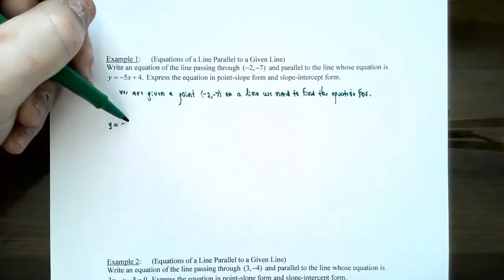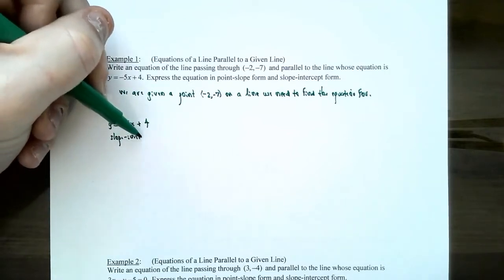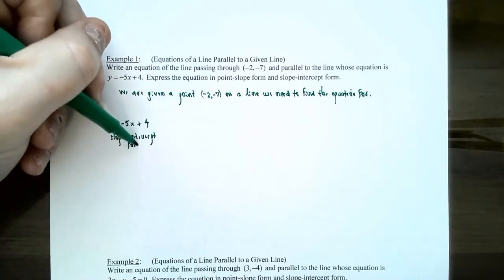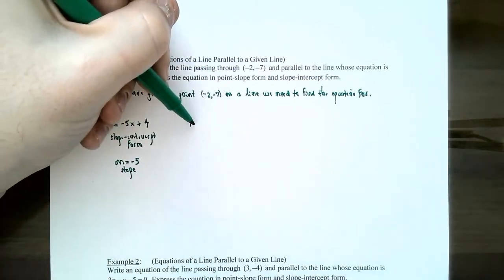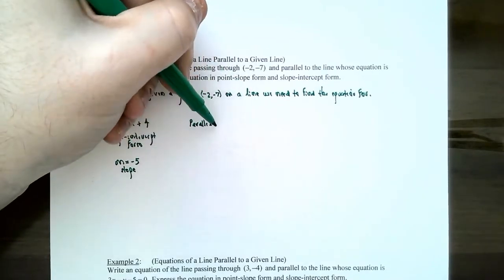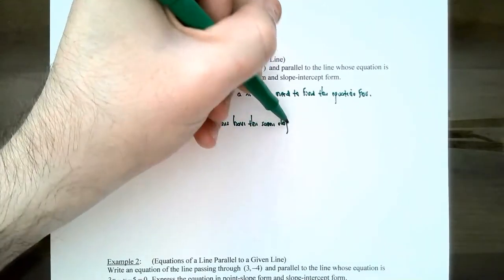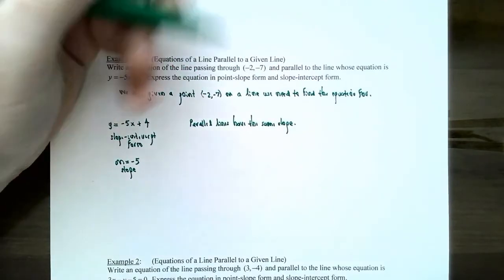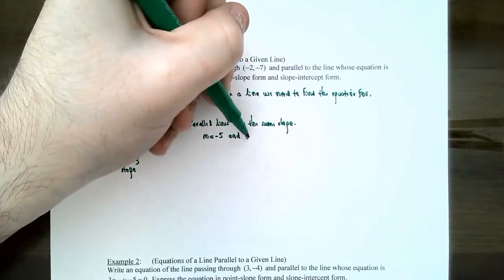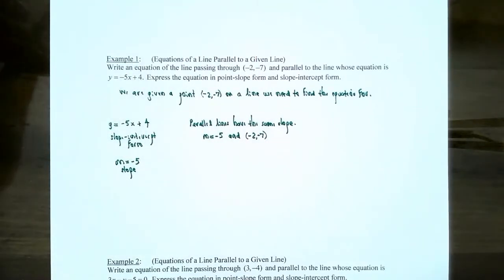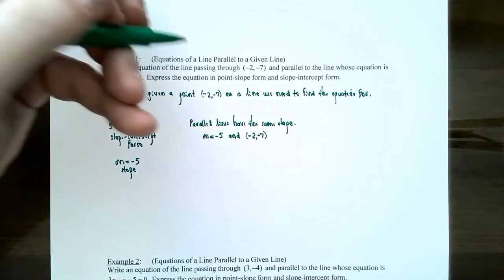How do we compare the line we're trying to find with the given line? Well, y equals negative five x plus four is already in slope-intercept form, solved for y. The number in front of the x is the slope, so the slope must be negative five for this line. Since we just found out that parallel lines have the same slope, the line we are trying to find will also have slope negative five. So m equals negative five, and the line passes through negative two, negative seven. We have the slope and a point, so we can use point-slope form.